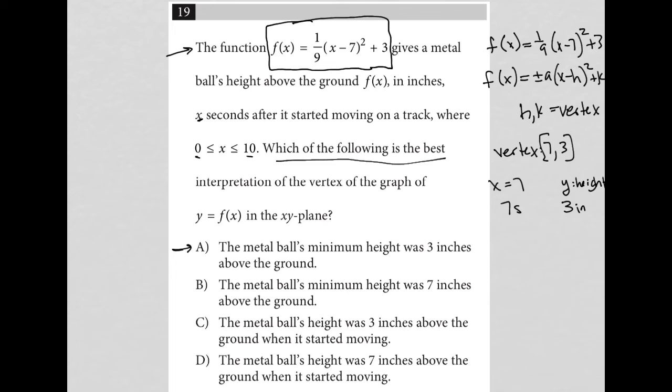Because it's a vertex of a parabola that's opening upward—our value here is positive, which means the parabola opens upward; if it were negative it would open downward—this is the minimum value. So I like choice A, I like that interpretation.